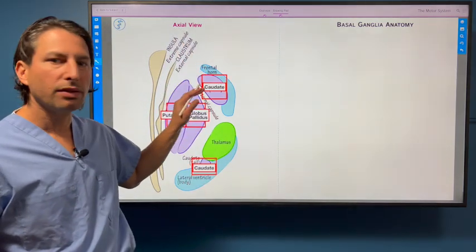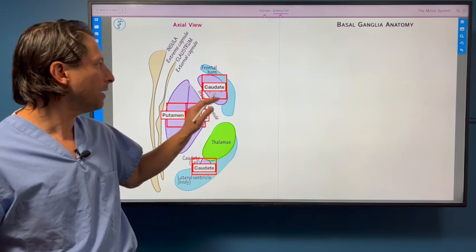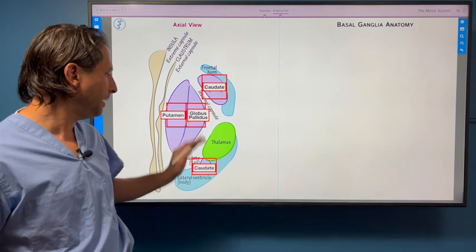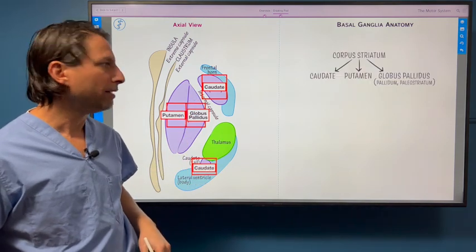These are the various structures within the basal ganglia: caudate head here, and then the putamen lateral to the globus pallidus medial, and then the caudate tail there.